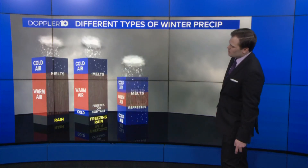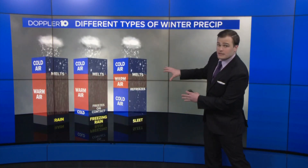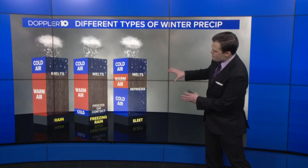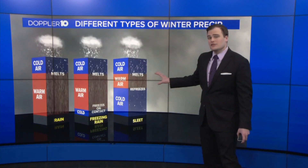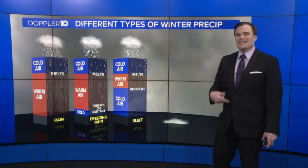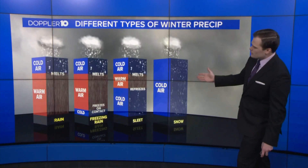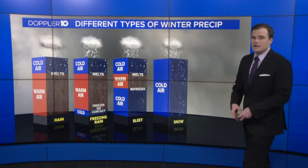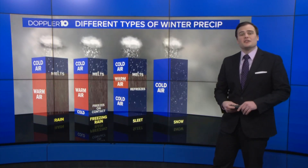Much like what we saw yesterday, we had a very narrow layer of warm air, which allowed for the snowflakes to partially melt, then refreeze into that sleet that we saw yesterday. And then, of course, when we're just dealing with plain cold air, there's better chances to see plain snow.